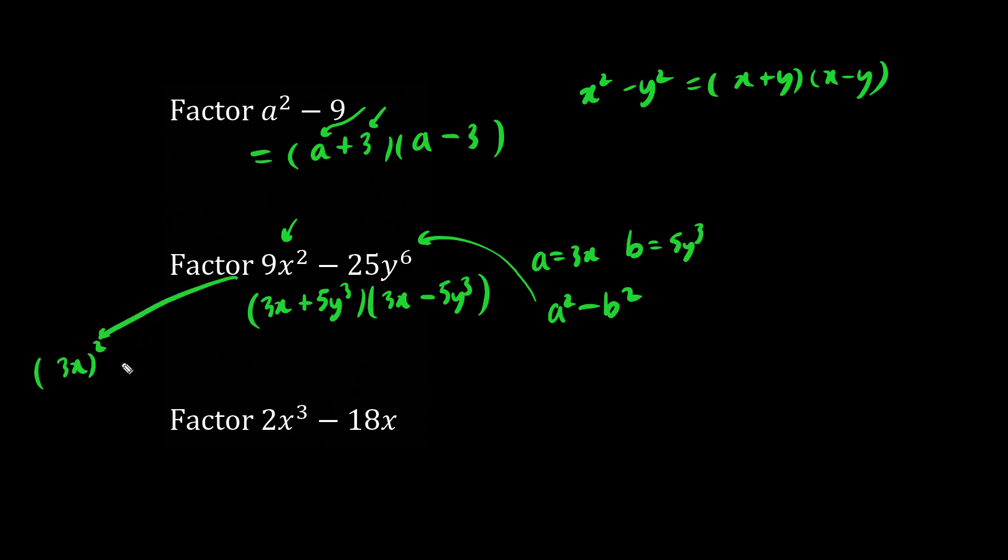So we could write it this way: 3x squared minus 5y cubed squared. We have our a squared minus b squared. So the answer is going to be a plus b, a minus b, which we have directly up here.